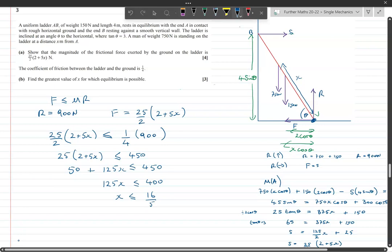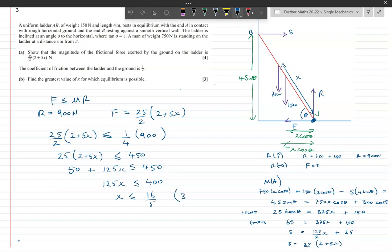So x is going to be less than or equal to 16 over 5, or 3.2 meters. The man can go as high as 3.2 meters and be in equilibrium. Any higher than that and the ladder is going to slip. I hope you found the video useful. I'm going to be doing some more moments equations and moments questions from OCR in the next few days. Thank you, bye bye.